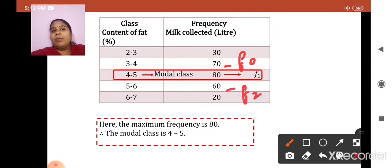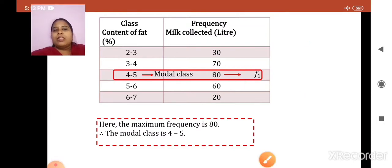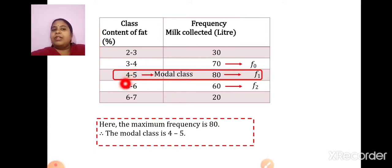How to remember this? It is in sequence: 0, then 1, then 2. F1 is the frequency of the modal class. Just above it, whatever is the frequency, that will be F0 — preceding is F0, succeeding is F2. Like this, we can get all the values. L is the lower limit of the modal class, which is 4.